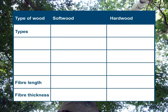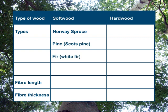For the types of softwood used, you need to think of spruce, pine, and fir wood. The average length of the fibres in the wood varies from 2 to 4 millimetres. The thickness of the fibres is between 0.02 and 0.04 of a millimetre.